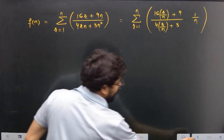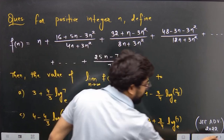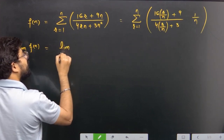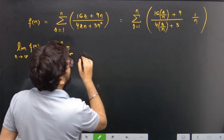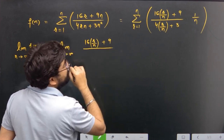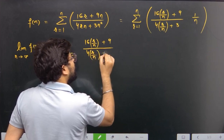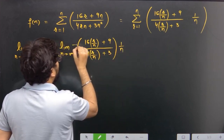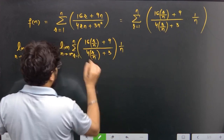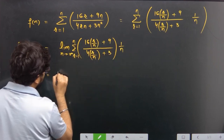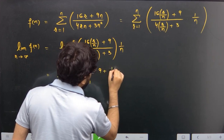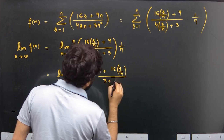Now we need to find the limit of f(n) as n tends to infinity. The limit is: limit n→∞ of (1/n) · Σ (r=1 to n) of (9 + 16r/n) divided by (3 + 4r/n). Since 1/n is not dependent on r, it comes outside the sigma.